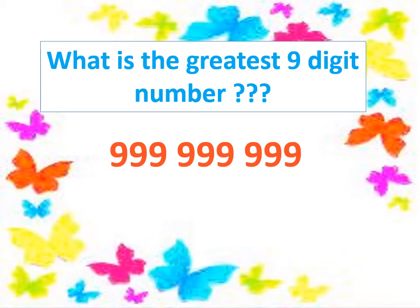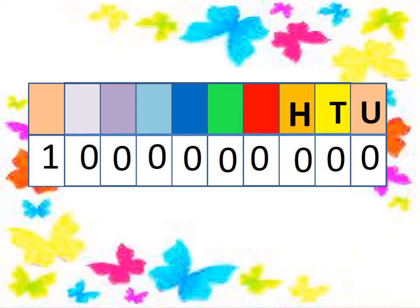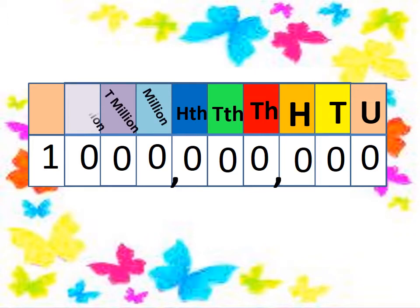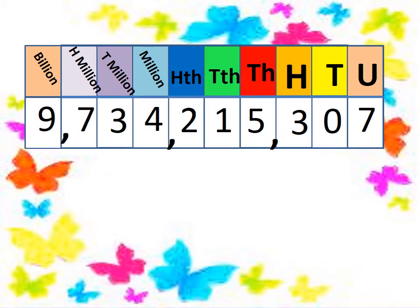If we want to get the number after this, we make plus one. The result contains ten digits. The first digit places are: unit, tens, hundreds, thousands, ten thousands, hundred thousands — the home of million — million, ten million, hundred million. Now we have a new home, a new family called billion or milliard. This number is read as one billion or one milliard.